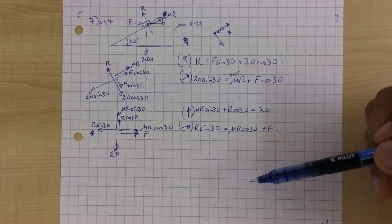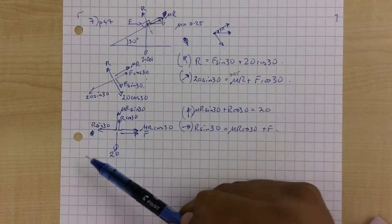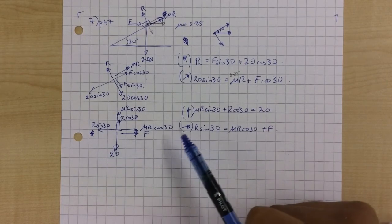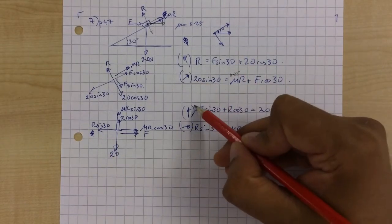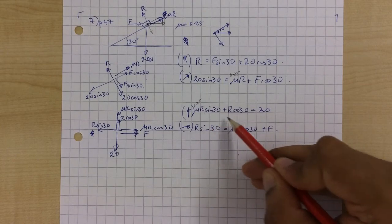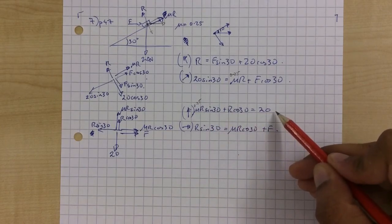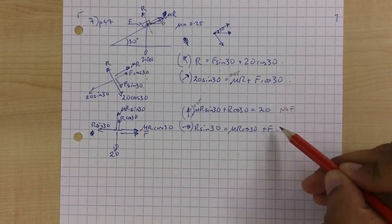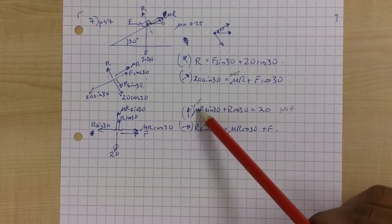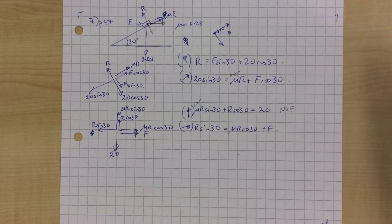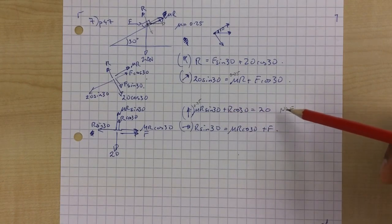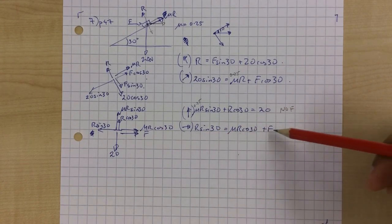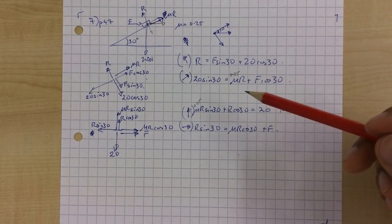After resolving horizontally and vertically rather than along the plane, in the perpendicular equation I've got mu equals 0.25 and R but no F — which is important, since F here refers to the horizontal force, not friction. So we can work out R directly from one equation with one unknown, store that value, then substitute R into the second equation to find F. Both approaches work.